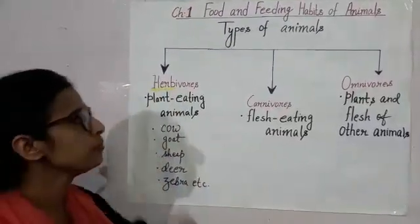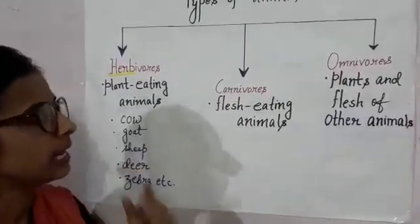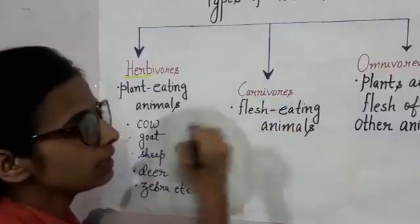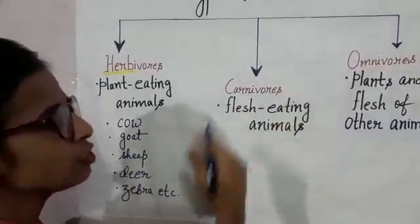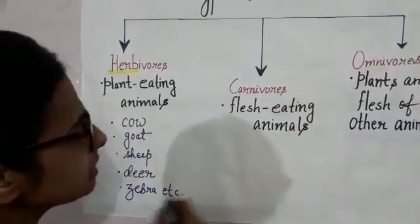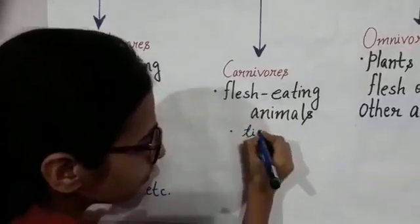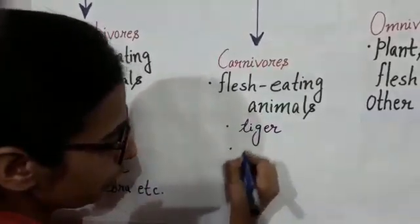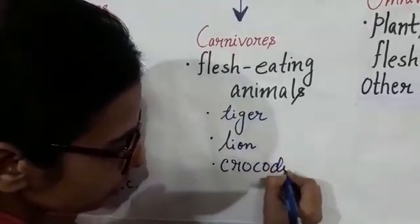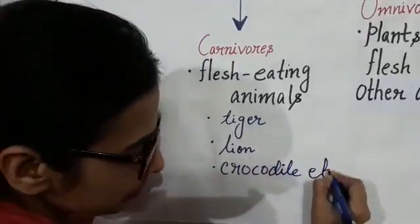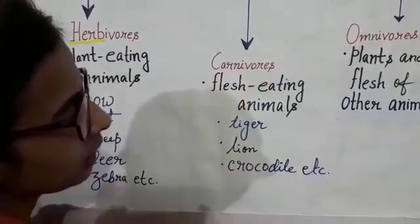So plant eating animals are called herbivores. Let us discuss carnivores. Carnivores are those animals that eat the flesh of other animals. So flesh eating animals are called carnivores. Let us write down some examples. You all know tiger, we know lion, then crocodile, etc. These are carnivores — animals that eat flesh of other animals.